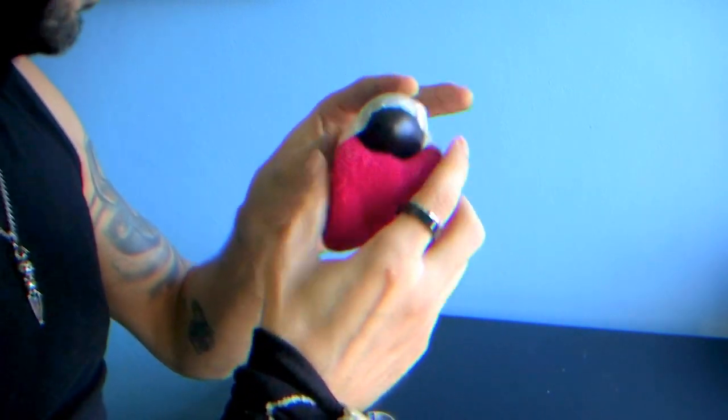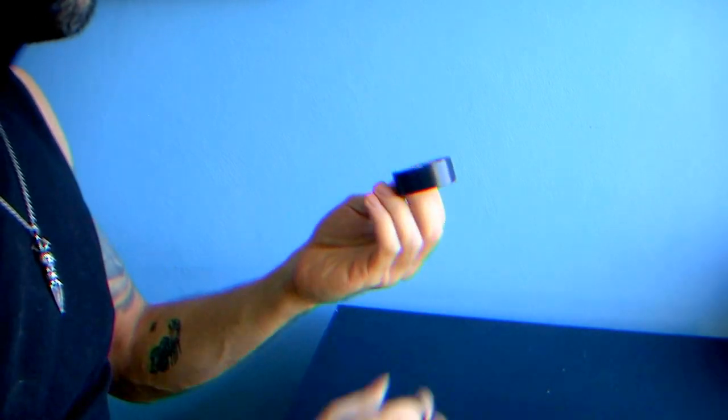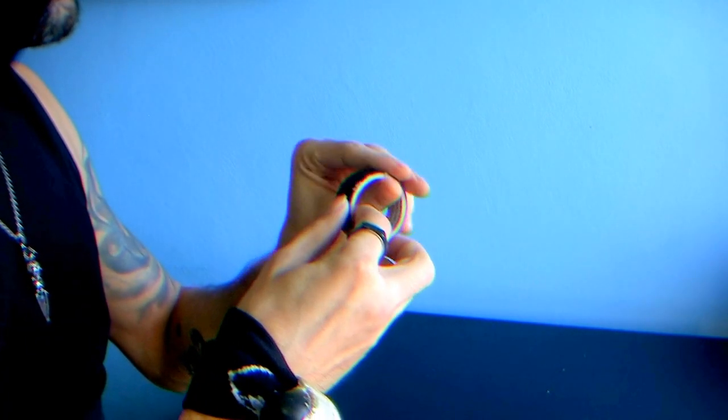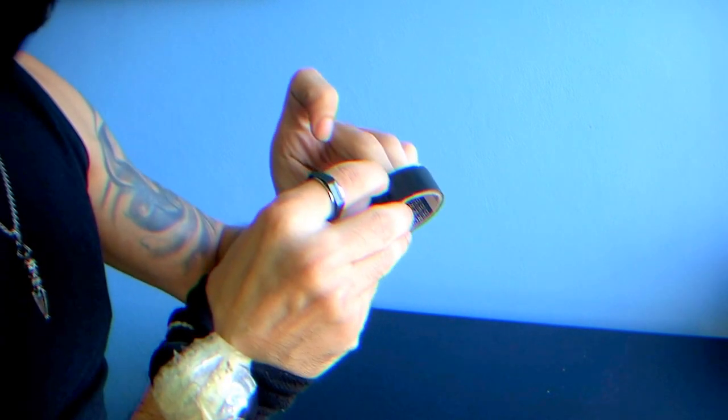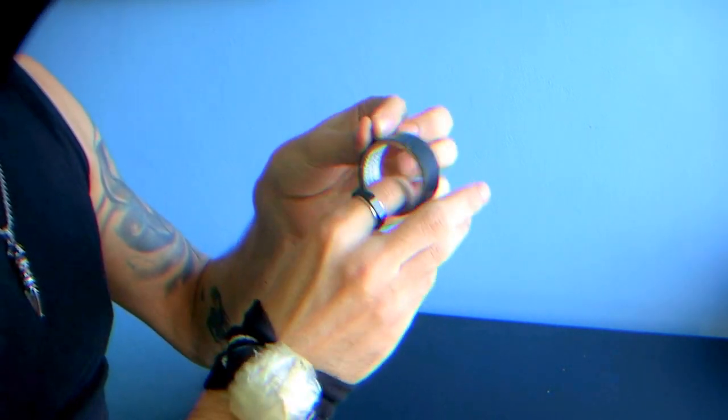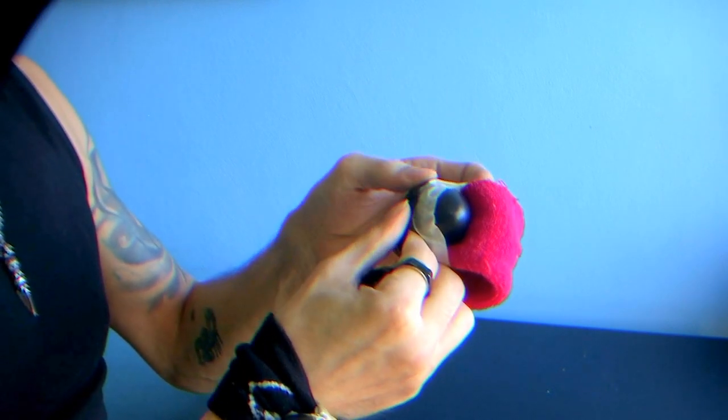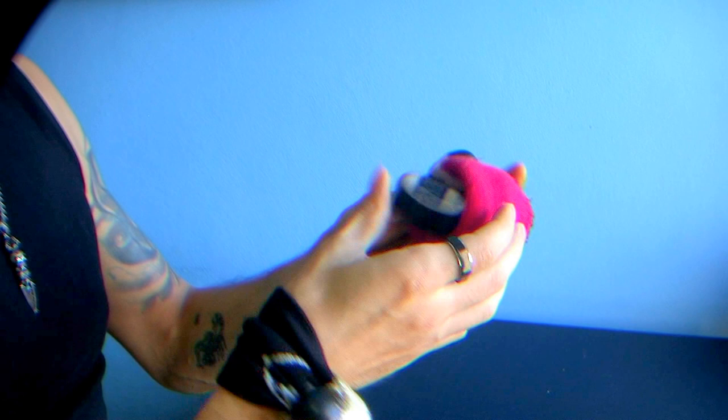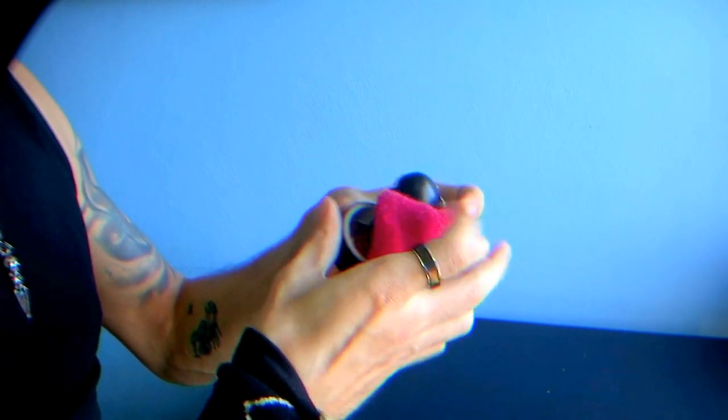Once you get this in, then you're going to take your other small tape or speed fix—anything you like. Open it up, not too much, and place it smack again on the center of the egg.